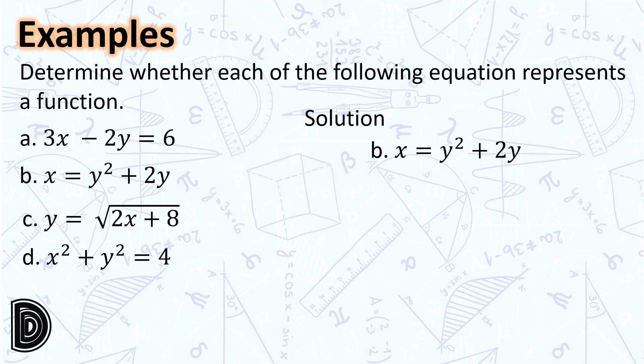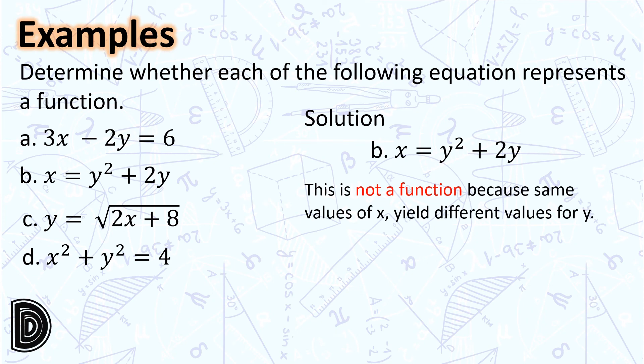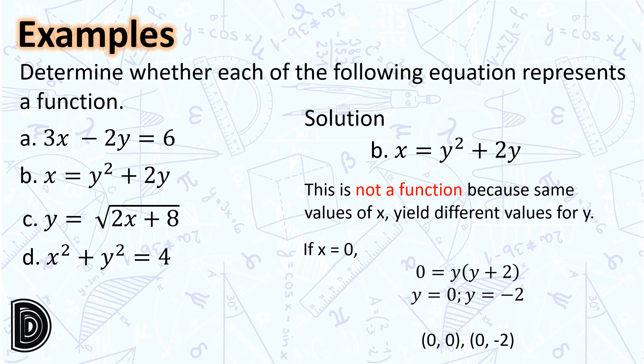Let us have letter b: x = y² + 2y. This is not a function because the same values of x yield different values for y. For example, when x = 0 is substituted into the relation, we get 0 = y(y + 2) in factored form. Each factor is equated to 0, giving y = 0 or y = −2. Written in set notation, (0,0) and (0,−2) would both be part of the relation. Hence, this is not a function.